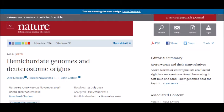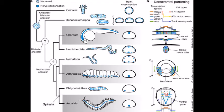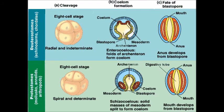Similarly, the 2015 paper "Hemichordate Genomes and Deuterostome Origins" notes a number of similarities that hemichordates share with more derived deuterostomes, as well as genes that were probably present in the common ancestor of all deuterostomes. And, even more interestingly, hemichordates have certain genes organized more like protostomes than deuterostomes. Protostomes develop their mouth before their anus embryonically, which is precisely the opposite of deuterostomes.